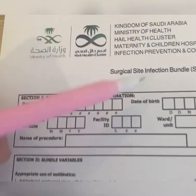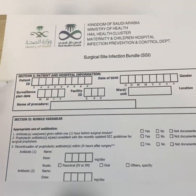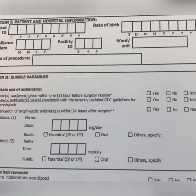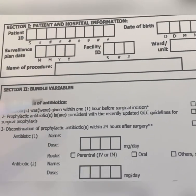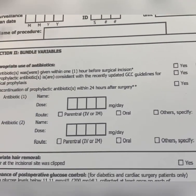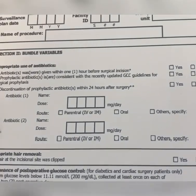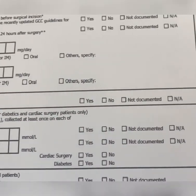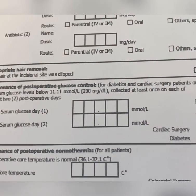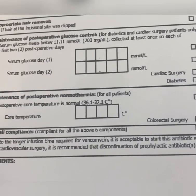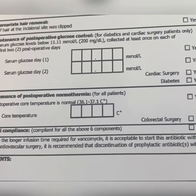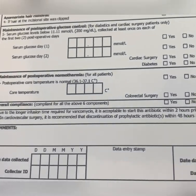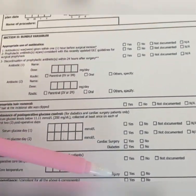The last form is the Surgical Site Infection Bundle Form. Fill in section one — patient and hospital information. Then section two — bundle variables: appropriate use of antibiotics (write the name, dose, and route of antibiotic 1 and 2 if applicable), appropriate hair removal (was hair at the incisional site clipped?), maintenance of post-op glucose control for diabetic and cardiac surgery patients only, and maintenance of post-op normothermia — post-op core temperature should be 36.1 to 37.1 degrees Celsius. If all bundle items are complied with, tick overall compliance.